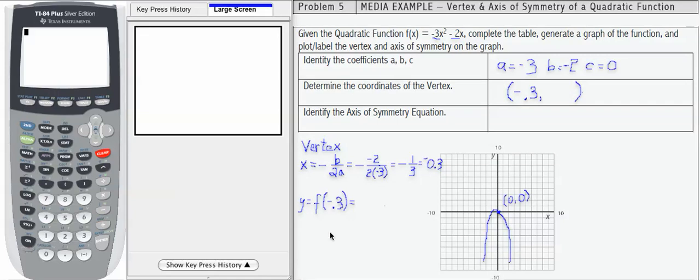To find the y-coordinate, we want to evaluate the function f at the x-coordinate, which was negative 0.3. Let's do that over here on the calculator screen. So that's going to be negative 3, parenthesis, negative 0.3, and parenthesis.